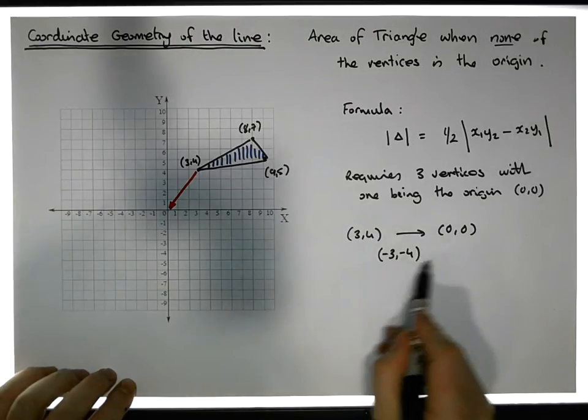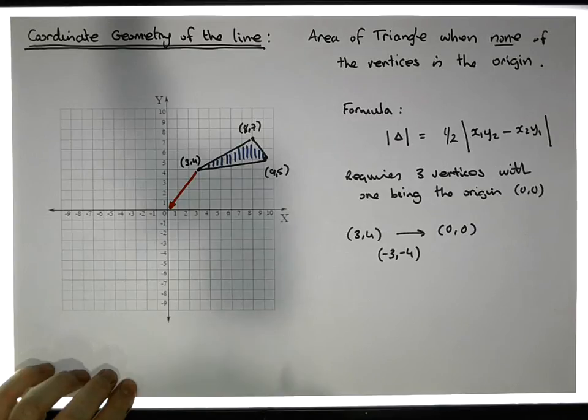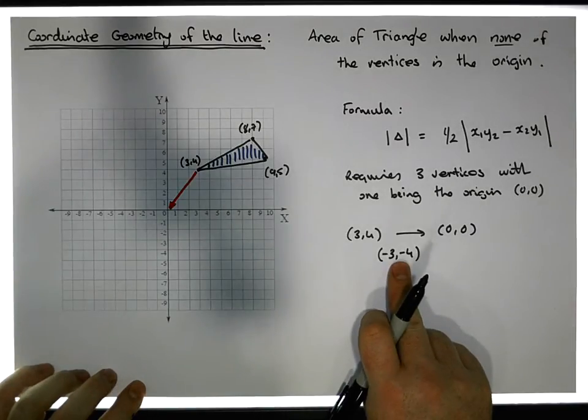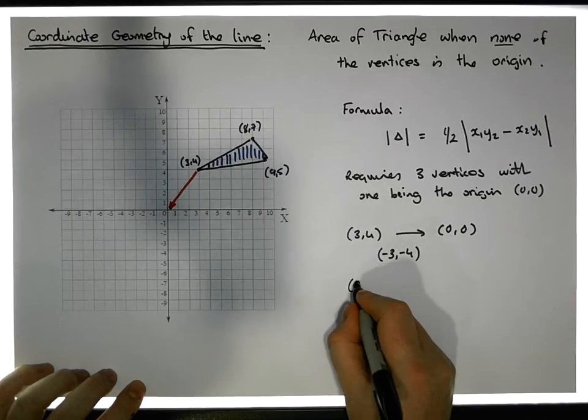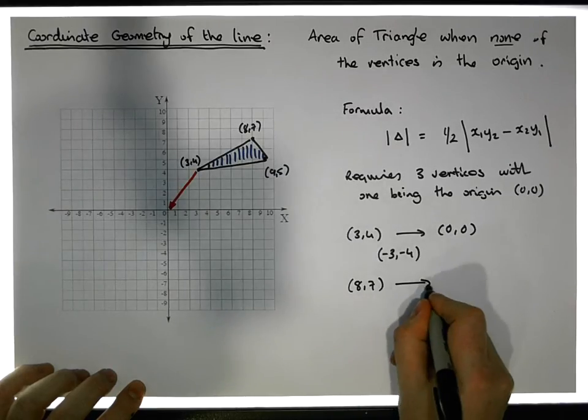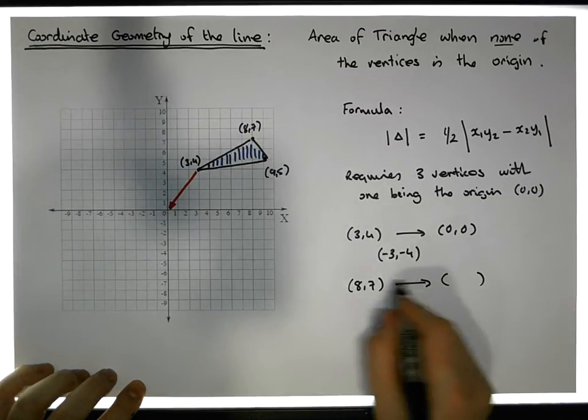So here's the transformation that we're going to use. Under this exact same transformation or translation, what happens to (8,7)? Well, (8,7) is taken to some value based off this minus three, minus four operation.